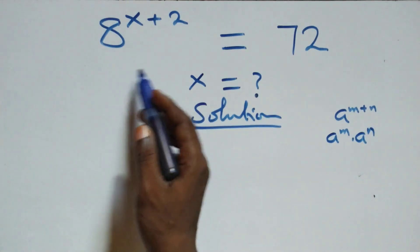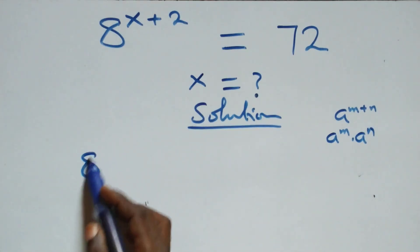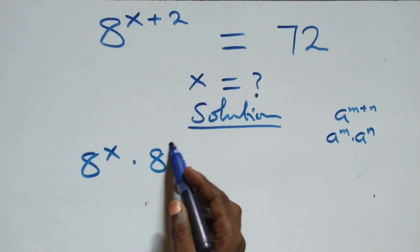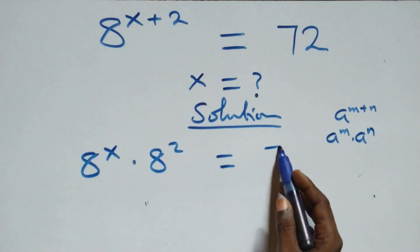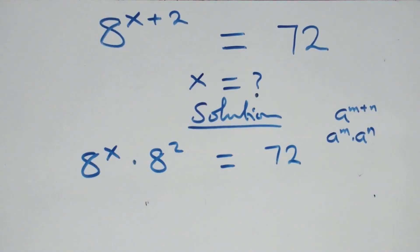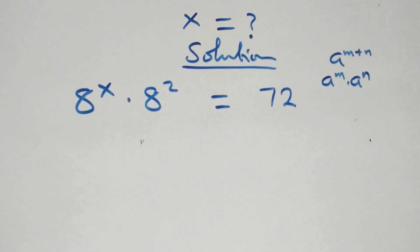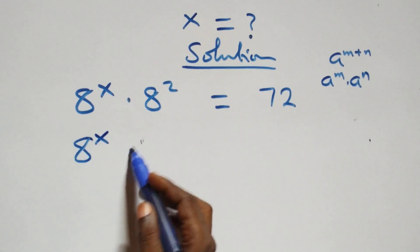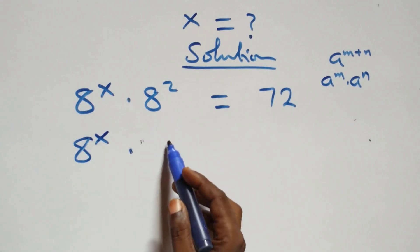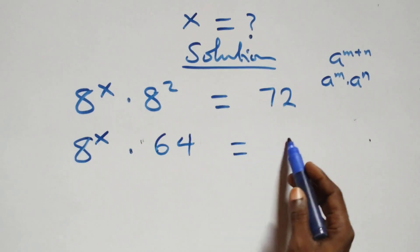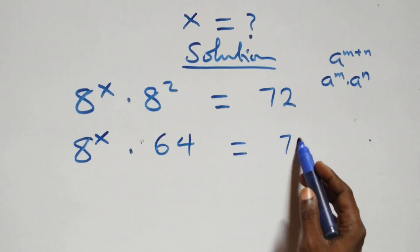Here what we have becomes 8 raised to power x times 8 squared equals 72. We can write this as 8 raised to power x times 8 squared, that is 8 times 8, which is 64, then equals to 72 on this side.